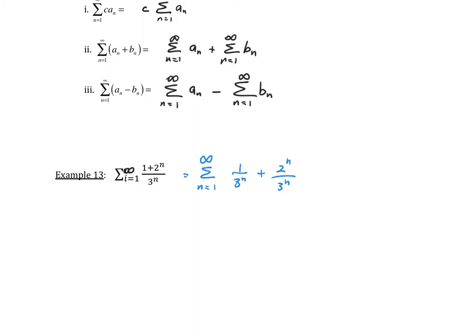And what I'm going to do is I'm going to split this. This will be the sum as n goes from 1 to infinity. And I can rewrite that first part as 1 over 3 to the n power plus the infinite sum as n goes from 1 to infinity. And I'm going to have 2 over 3 to the n power.